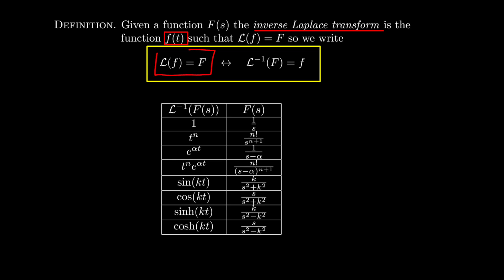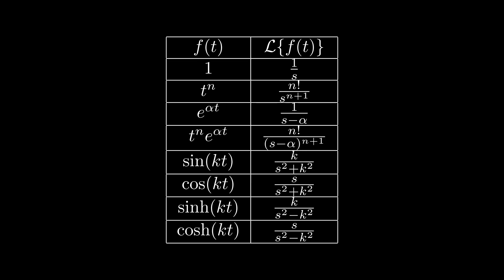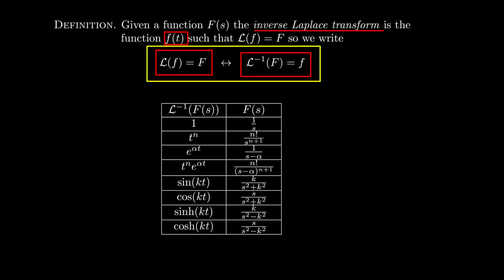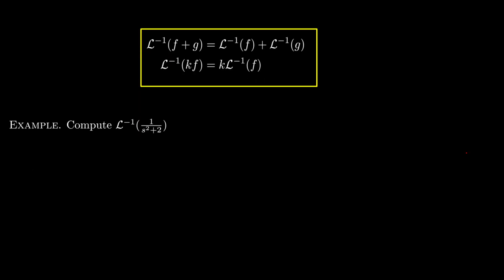The inverse Laplace transform is defined completely in terms of the Laplace transform. There are some general conditions for it to be well-defined, but we don't go into that here. Our table from before immediately gives us inverse Laplace transforms — the inverse Laplace transform of each function on the right is the corresponding function on the left. Also, because the Laplace transform is linear, the inverse Laplace transform is also linear, and we can use it together with our table to compute examples.